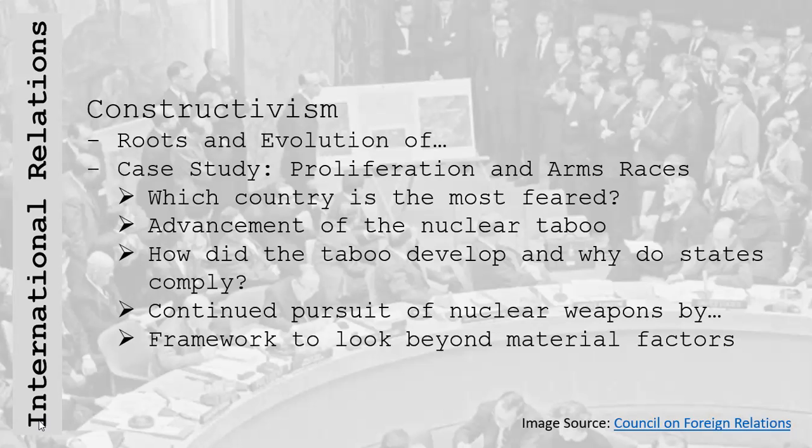The nuclear taboo is tied into norm development as well as the pariah status of non-signatories to the Non-Proliferation Treaty, and it connects to the identity of states. States that choose not to participate — that ignore the non-proliferation treaty and don't sign on — will be viewed differently by countries that have signed. The fact that North Korea, Pakistan, India, and Israel remain outside of agreement in pursuit of horizontal proliferation contributes to the perception that non-member states pose a significant security risk to the international system.